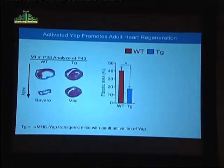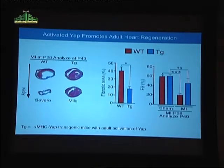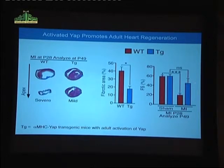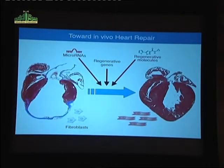The fibrotic scar is diminished when we simply activate this terminal step in the Hippo pathway. If you measure cardiac contractility in normal mice when you induce a myocardial infarction, contractility drops precipitously, whereas in animals with activated YAP, they maintain cardiac contractility due to proliferation. What I've told you is that several events enable the neonatal heart to regenerate, and those steps are blocked or diminished in the adult heart. We're currently trying to manipulate those pathways using microRNAs, regenerative genes, or regenerative molecules.